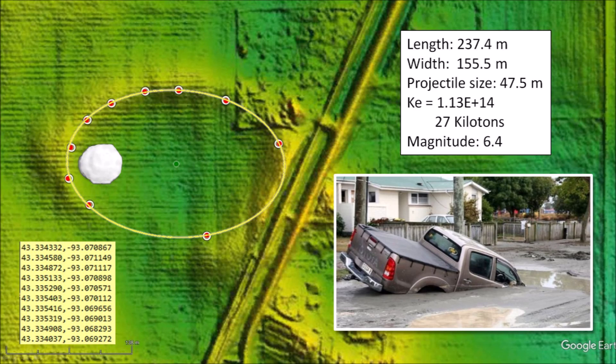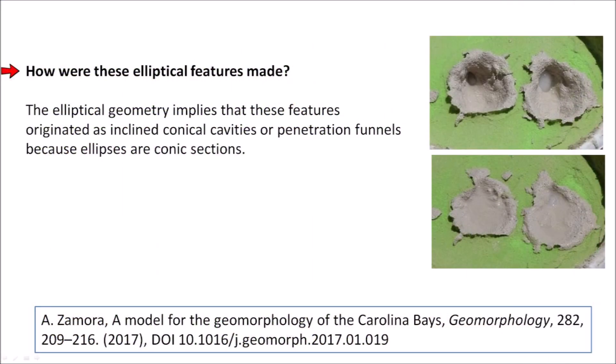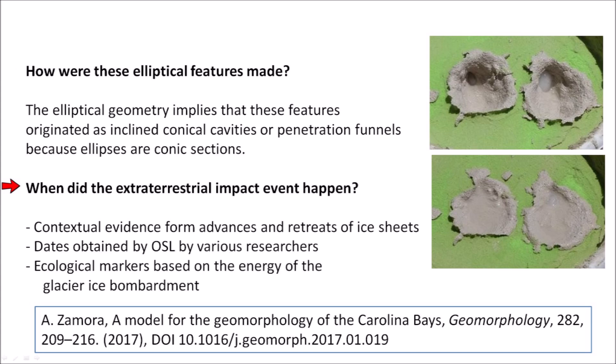In general, seismic vibrations of magnitude 6.0 or above can cause saturated soil to liquefy, as happened during the 2011 earthquake in Christchurch, New Zealand. The origin of the Carolina Bays has been greatly debated. The mainstream theories propose that these geological structures were created by wind blowing on ponded water. However, ellipses are conic sections, and the precise elliptical geometry of the bays implies that these features originated as inclined conical cavities or penetration funnels. The Glacier Ice Impact Hypothesis, published in 2017, proposes that an extraterrestrial impact on the Laurentide Ice Sheet ejected pieces of ice, and the secondary oblique impacts created the Carolina Bays and the Nebraska Rainwater Basins.